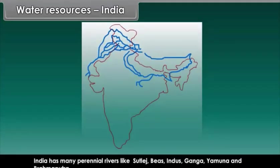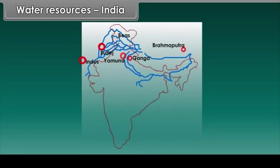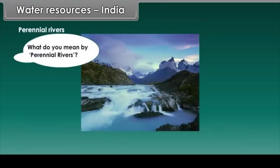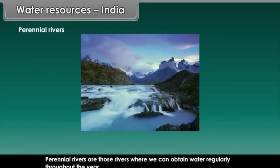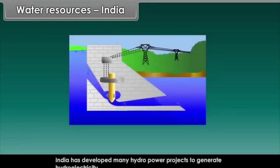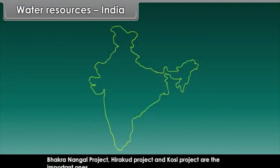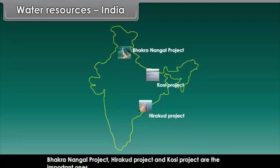India has many perennial rivers like Sutlej, Beas, Indus, Ganga, Yamuna, and Brahmaputra. Perennial rivers are those rivers where we can obtain water regularly throughout the year. India has developed many hydropower projects to generate hydroelectricity, of which Bhakra Nangal project, Hirakud project, and Kosi project are the important ones.